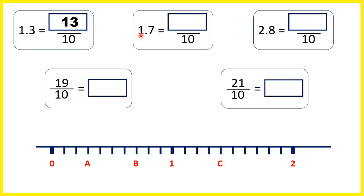Now for 1.7, we have 1 whole and 7 tenths, but 1 whole is the same as 10 tenths. So the 1 whole is 10 tenths. If we add 7 tenths, we have 17 tenths altogether.